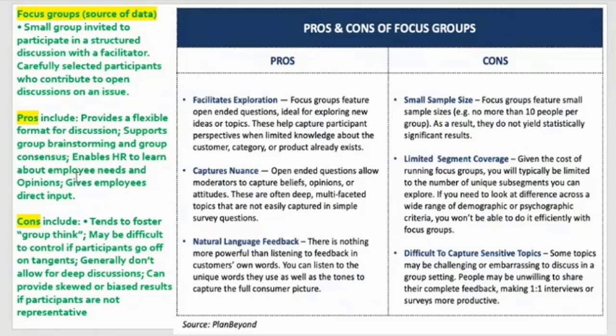A disadvantage of the focus group is the small sample size. Usually focus groups are no more than 10 people, maximum 12 people, and as a result they may not yield statistically significant results. They also have limited segment coverage — because of the costs associated with a focus group, you're limited to a specific number, and when you have differences across a wide range of demographics and psychographic criteria, you may not be able to efficiently get all the information you need.